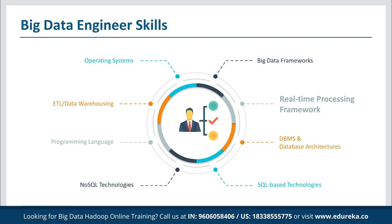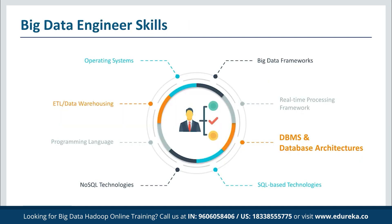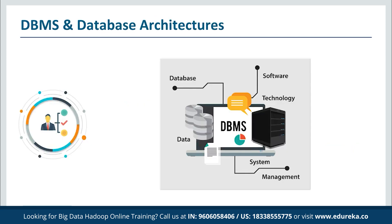The next skill is real-time processing frameworks. Real-time processing with quick actions is the need of the hour, whether it is detecting fraudulent transactions in a credit card system or powering a recommendation system. Apache Spark is one such distributed real-time processing framework used rigorously in the industry, and it can be easily integrated with Hadoop leveraging HDFS. Next is database management systems and architecture. A DBMS stores, organizes, and manages a large amount of information within a single software application. Data engineers need to understand DBMS to manage data efficiently, which helps in improved data sharing, data security, access, integration, and minimizing data inconsistencies — fundamentals required to build a scalable, robust, and fault-tolerant system.